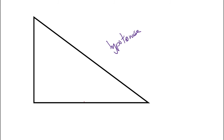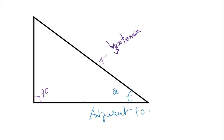We are going to talk about sine, cosine, and tangent. We need a 90-degree triangle. This side we call the hypotenuse. What determines the other sides is the angle. If we take angle A, the side next to it is called adjacent to angle A, and the other side is opposite to A.